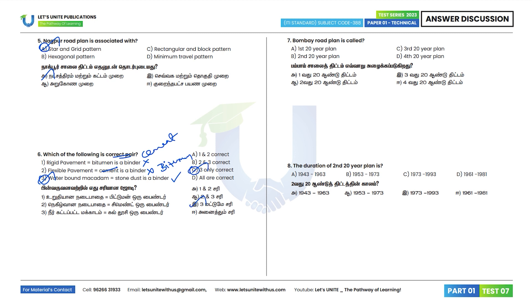7th question: The Bombay Road Plan is called the Second 20-Year Plan. Option B is the correct answer; the correct year is 1961. The First 20-Year Plan is Nagpur, and the Third 20-Year Plan is Lucknow.